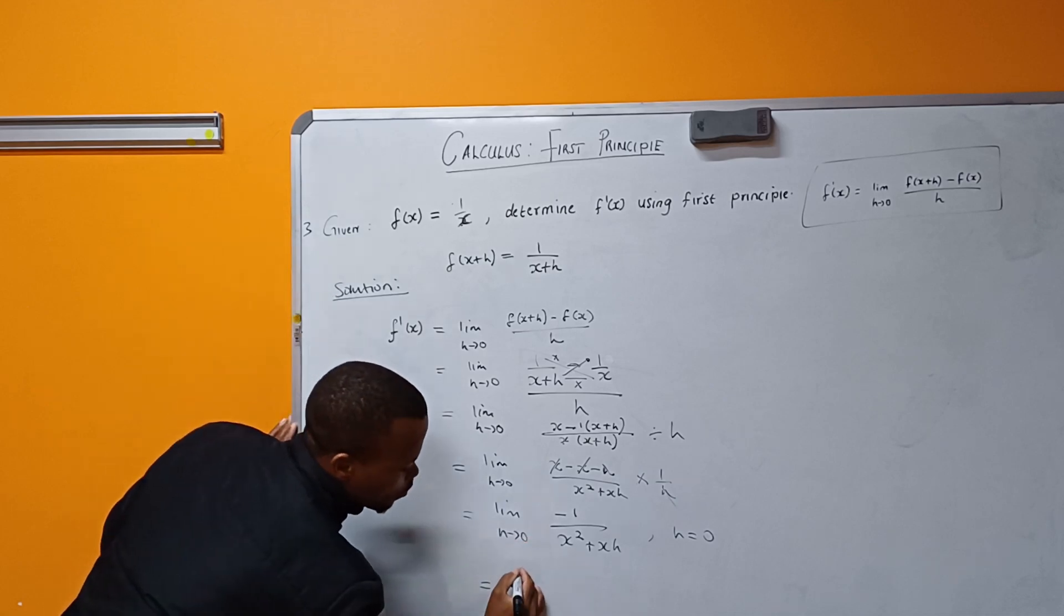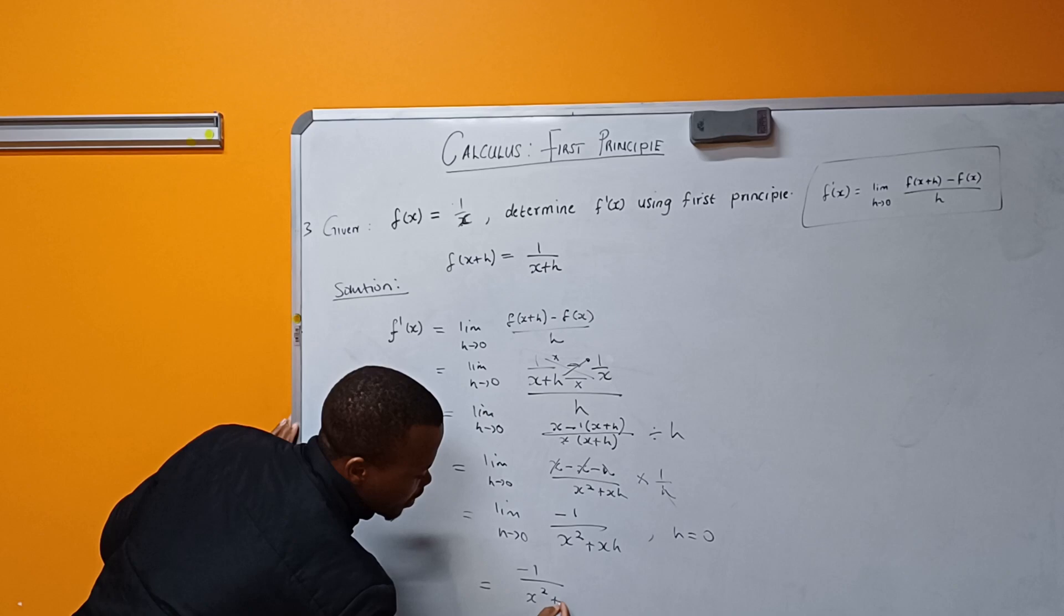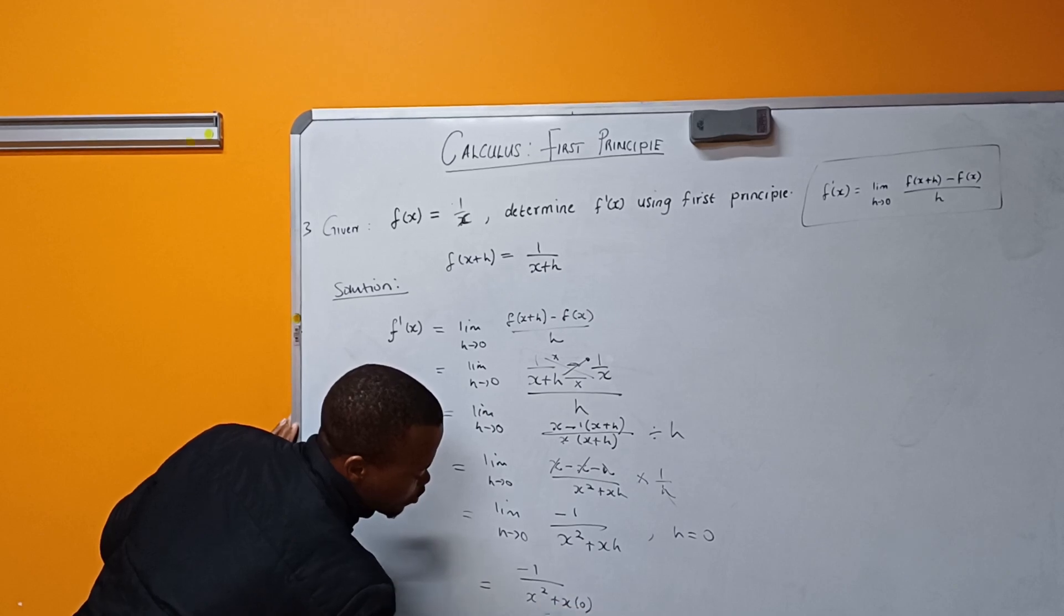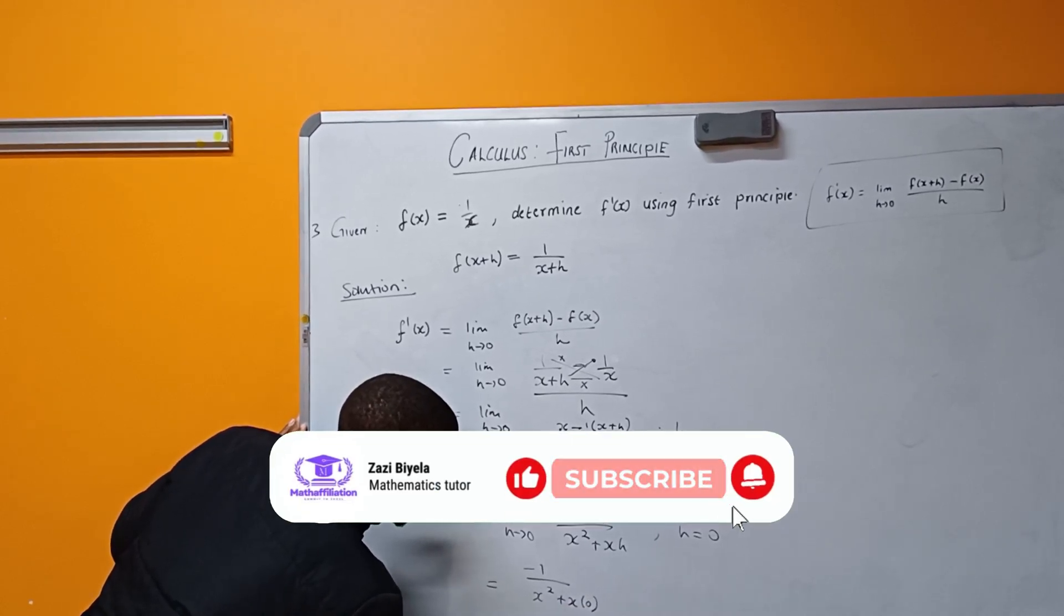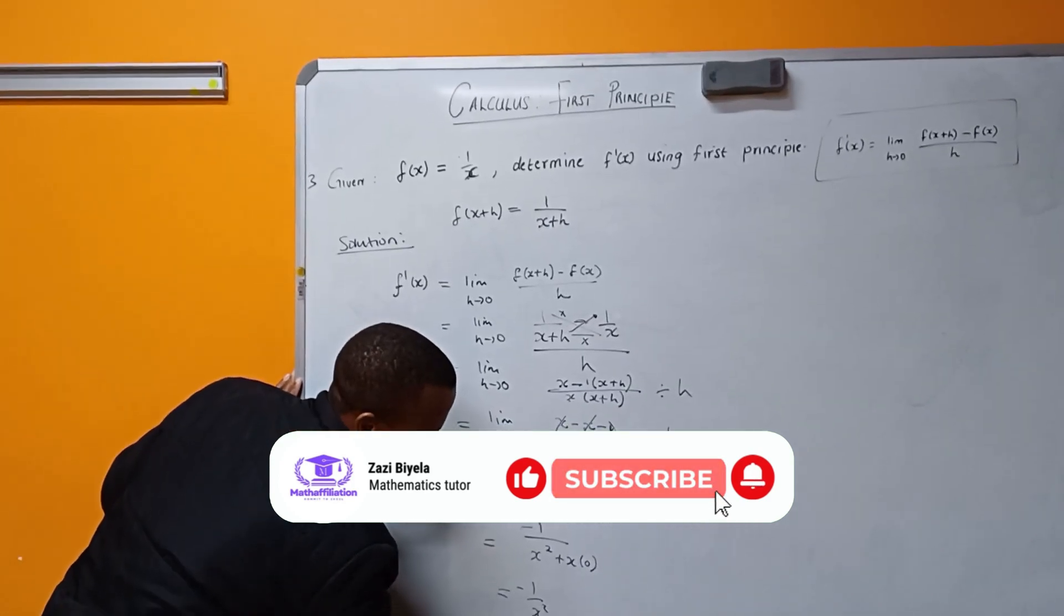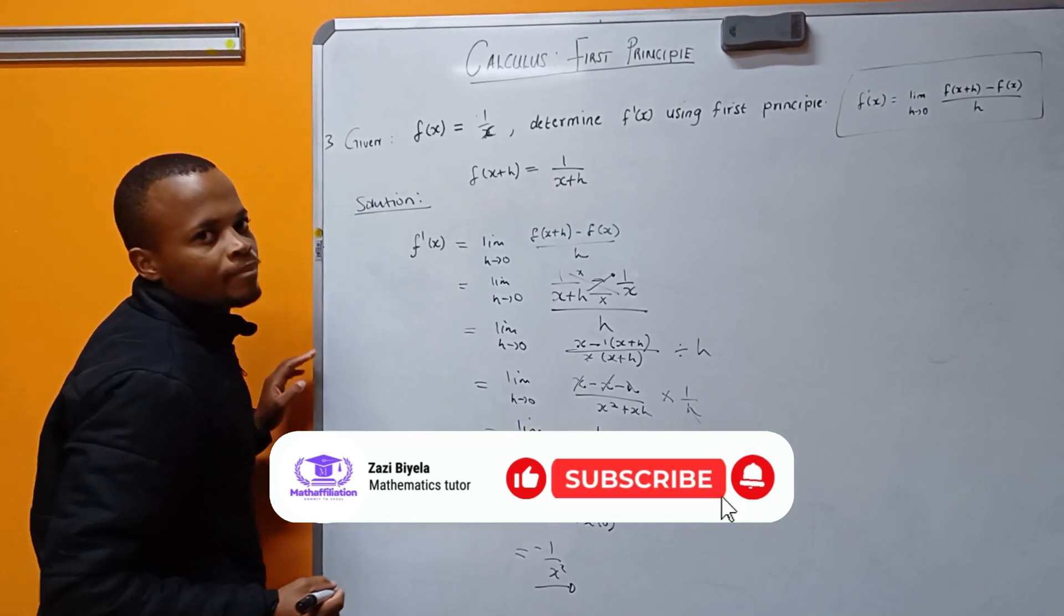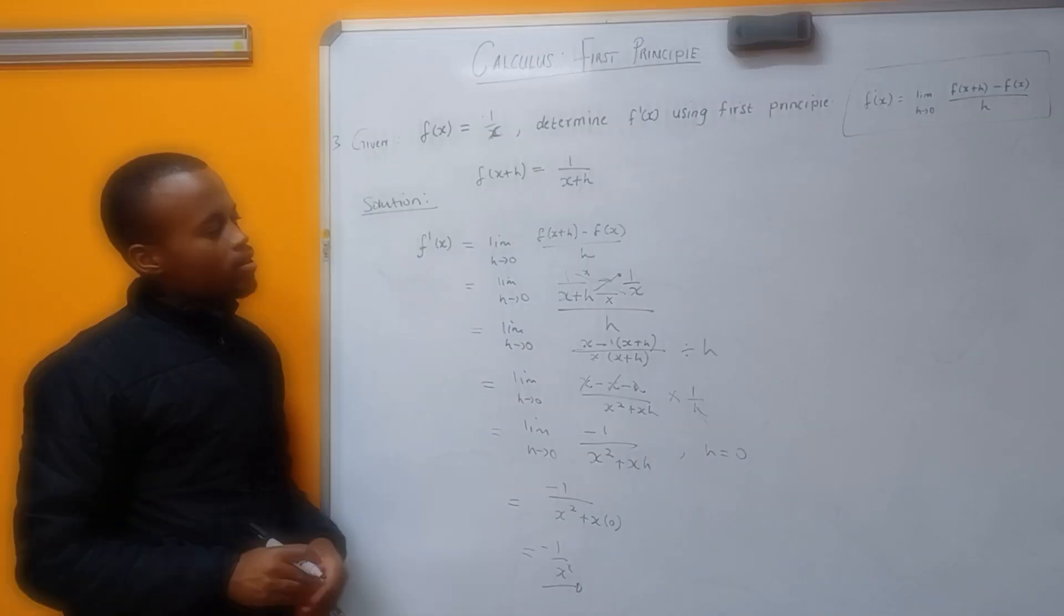So here it will be -1/(x² + x·0), which becomes -1/x². This is the solution.